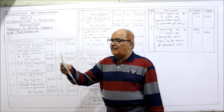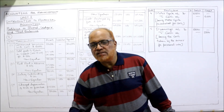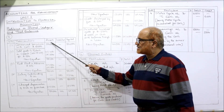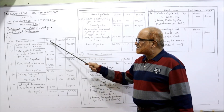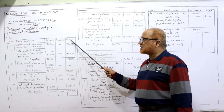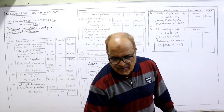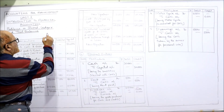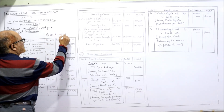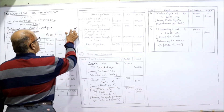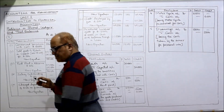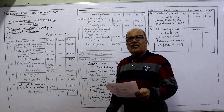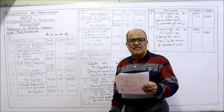The format for this problem is: serial number, transactions, assets, liabilities, capital. Remember: Assets = Liabilities + Capital. I will write it down so you don't forget — Assets = Liabilities + Capital.